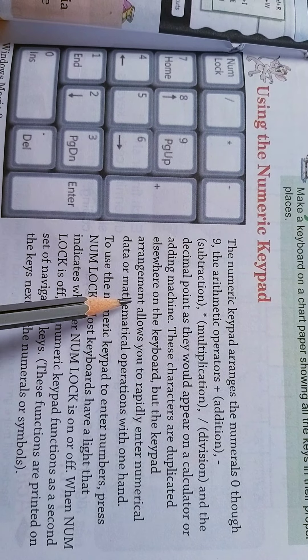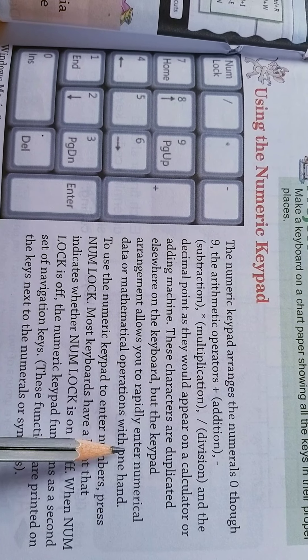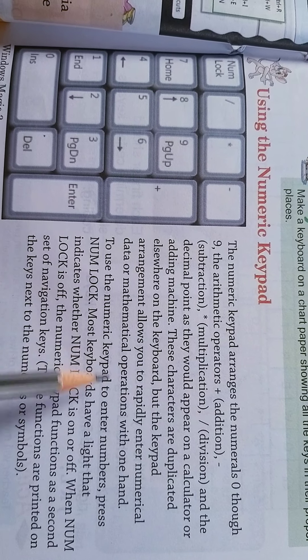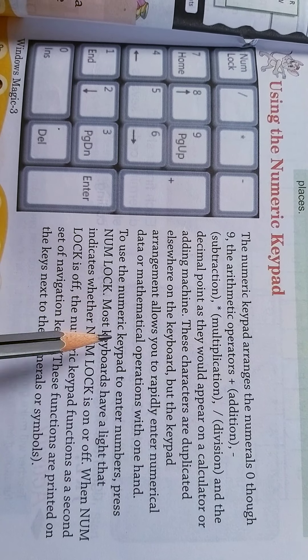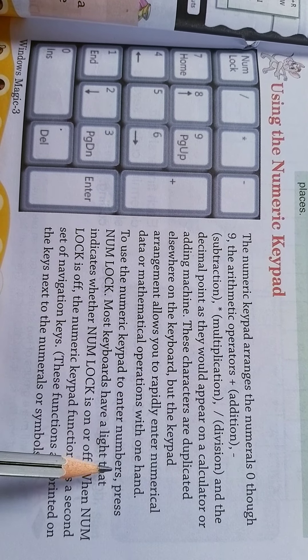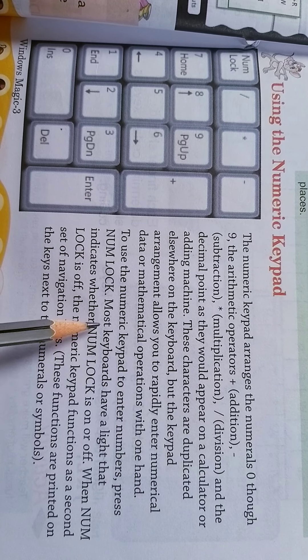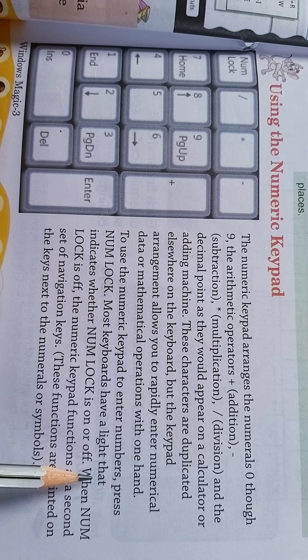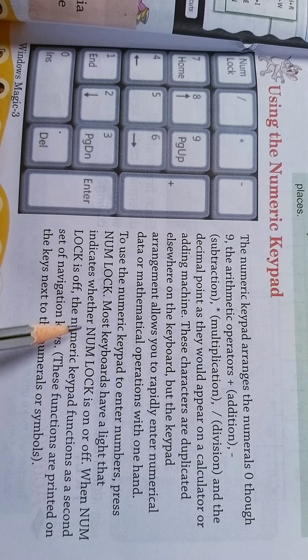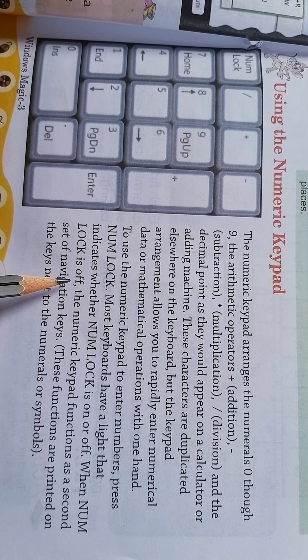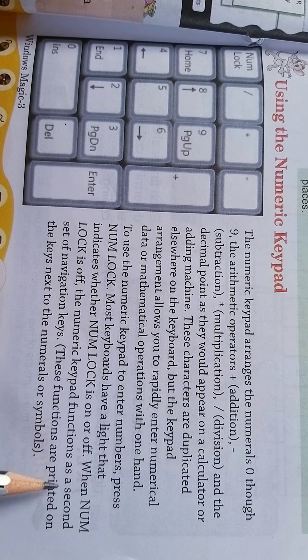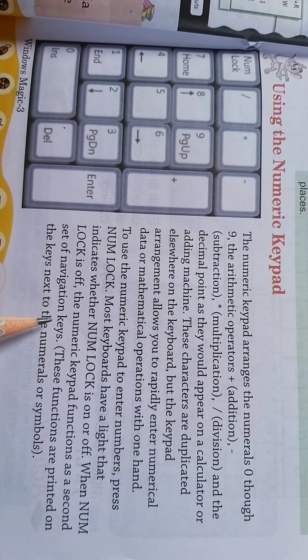But the keypad arrangement allows you to rapidly enter numeric data or mathematical operations with one hand. To use the numeric keypad to enter numbers, press num lock. Most keyboards have a light that indicates whether num lock is on or off. When num lock is off, the numeric keypad functions as a second set of navigation keys.